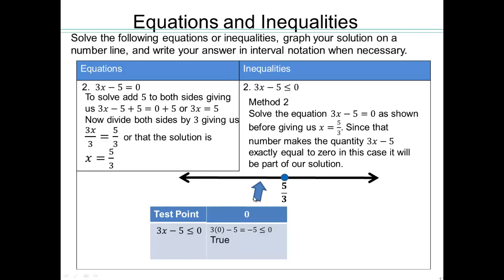What do you want to pick? All right, 0 is good. So 3 times 0 minus 5 is negative 5. And negative 5 is less than or equal to 0, so true. So that is part of your solution. What about that? Let's say pick 2. And that's not a true statement. So that will be your solution.